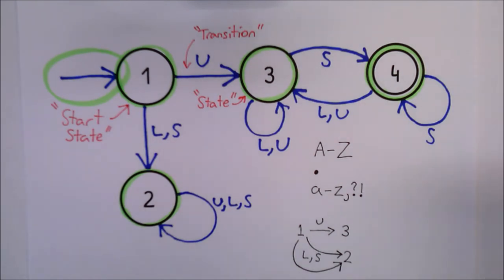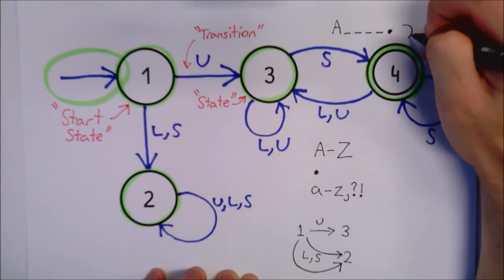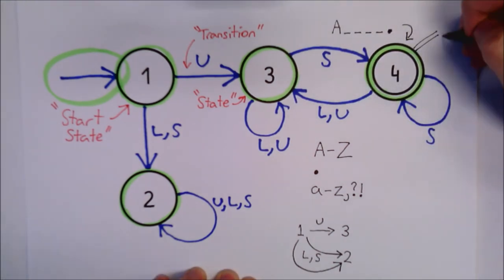Lastly, state 4 on the right is two circles, telling us that this is an accepting state. For this example, acceptable sentences that begin with the capital letter and end with a full stop will result in transitions that end at this state.